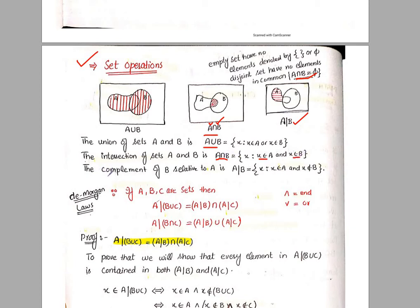Next is the complement of B relative to A. We denote it as A \ B. The elements that come in it are those X such that X belongs to A and X does not belong to B. So we only take elements from A and exclude elements of B. Such elements are called the complement of B relative to A, denoted by A \ B.